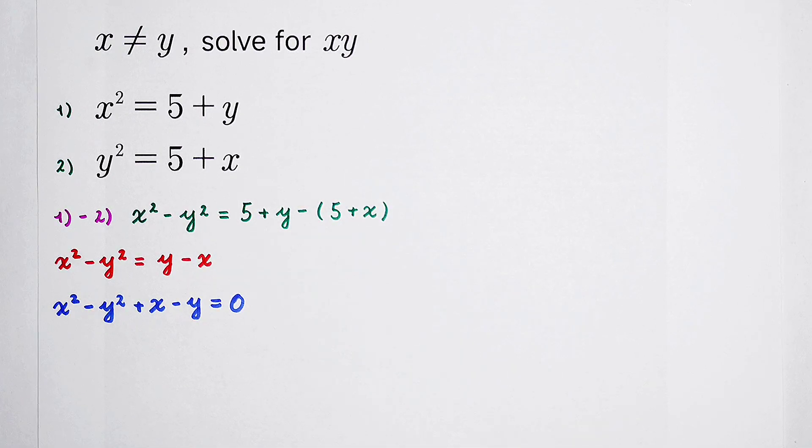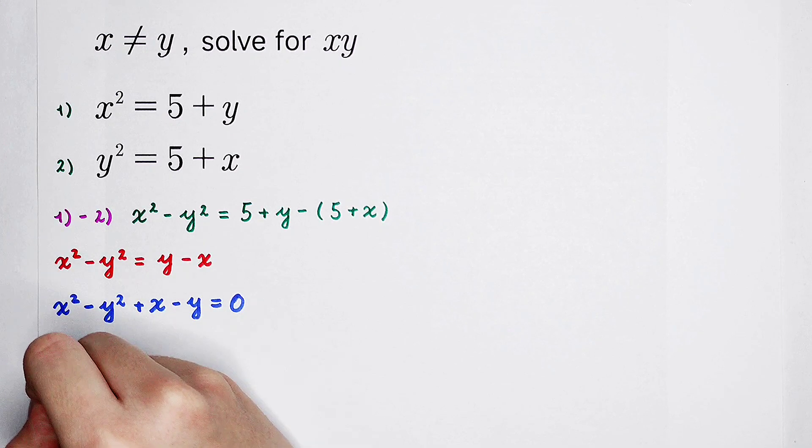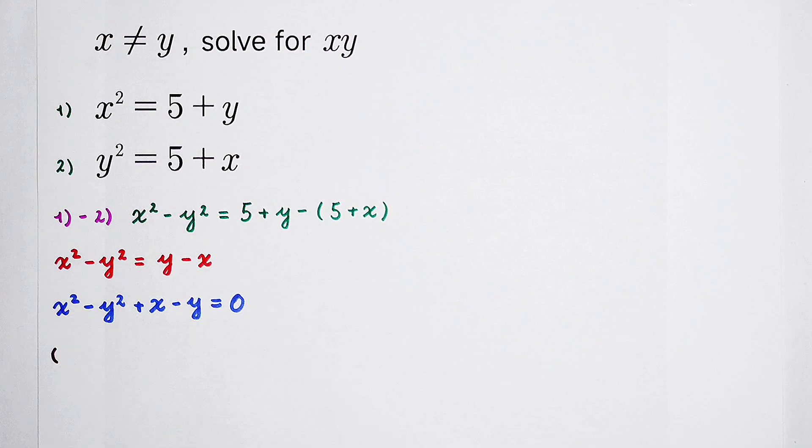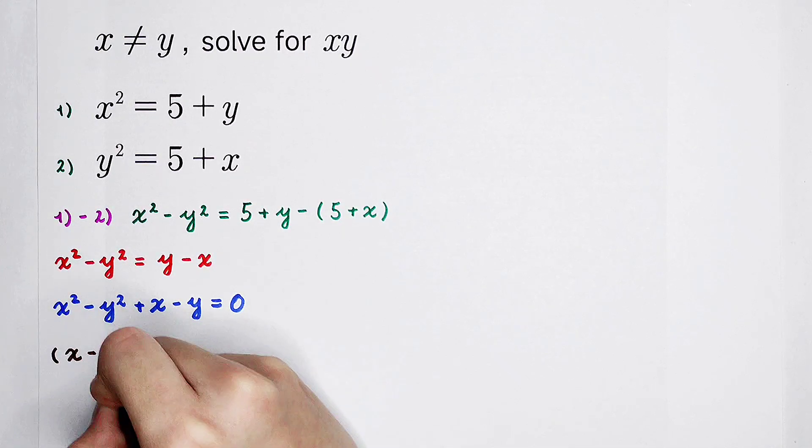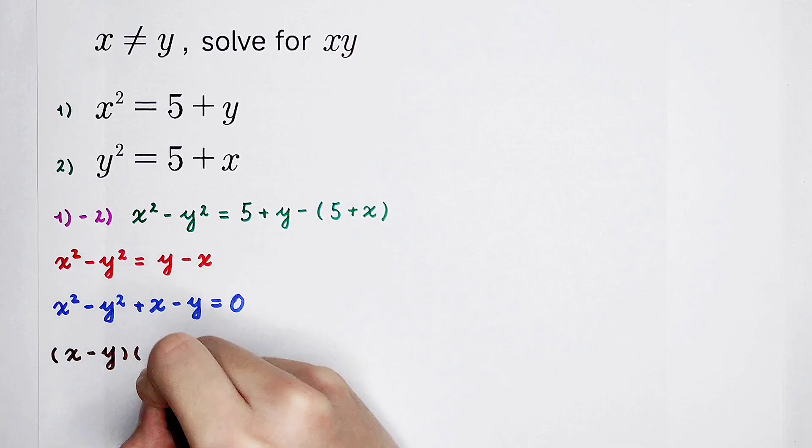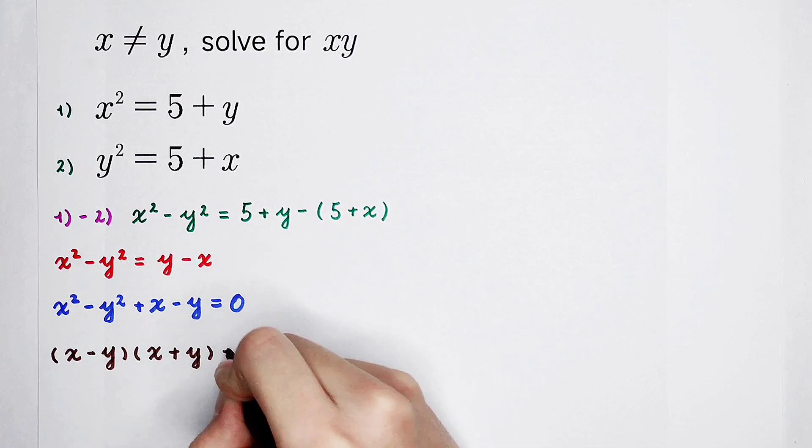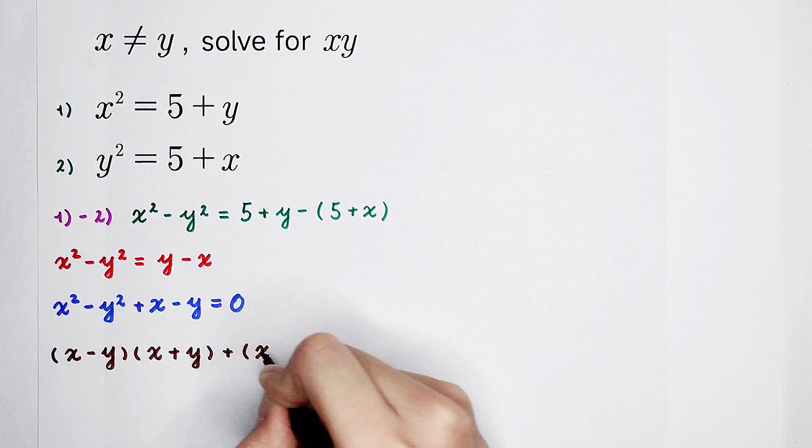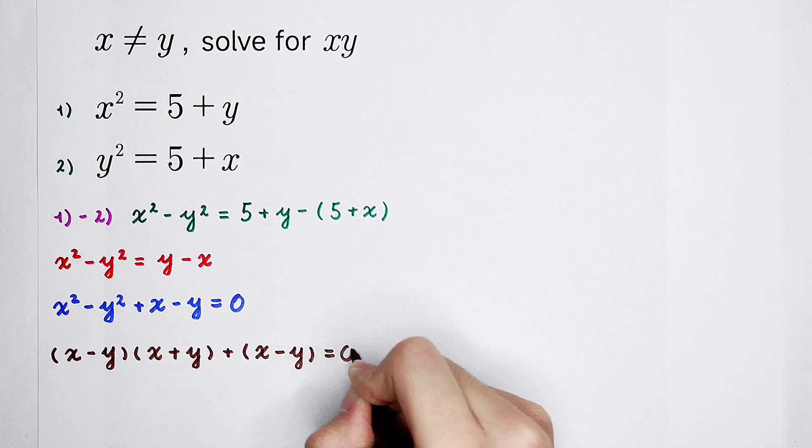How should you do with the left hand side? By factorizing. x squared minus y squared, the famous identity, is equal to x minus y times x plus y. And then plus x minus y. Now, here, I add a bracket.